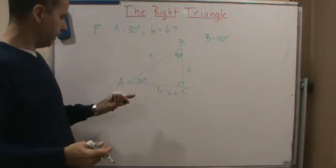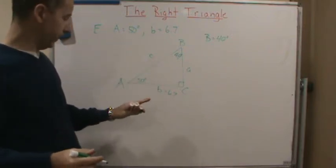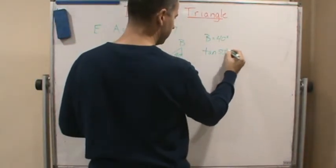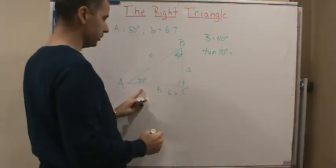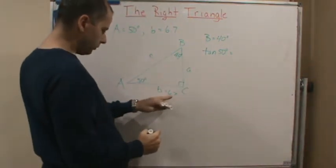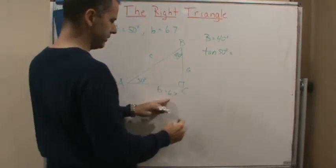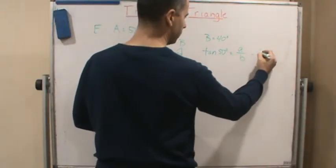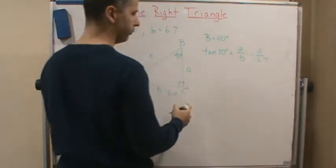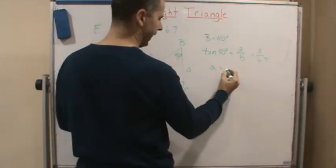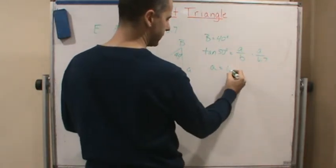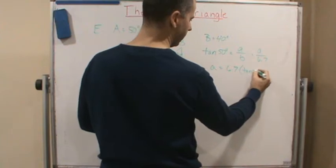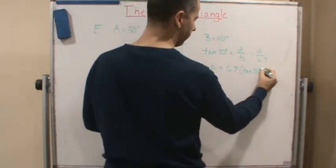Or cotangent, if you want, but tangent will work just fine. So let's do tangent of 50, so tangent of 50 degrees equals what? Opposite over adjacent, which is going to be A over B, which equals A over 6.7, and then of course, you can solve for A, which gives us 6.7 times tangent of 50 degrees.